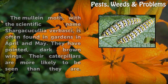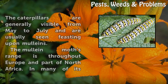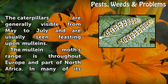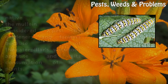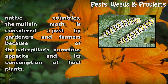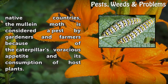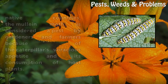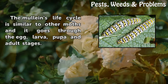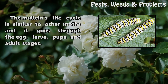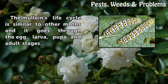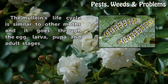They have pointed, dark brown wings. Their caterpillars are more likely to be seen than they are. The caterpillars are generally visible from May to July and are usually seen feasting upon mulleins. The mullein moth's range is throughout Europe and part of North Africa. In many of its native countries, the mullein moth is considered a pest by gardeners and farmers because of the caterpillar's voracious appetite and its consumption of host plants. The mullein's life cycle is similar to other moths and it goes through the egg, larva, pupa, and adult stages.